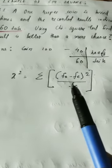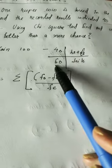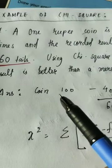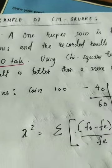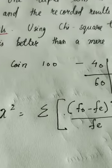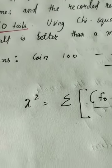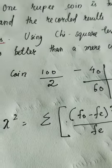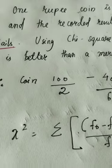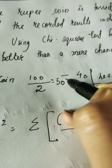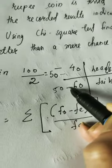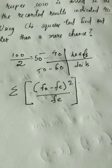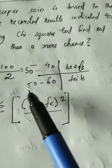We have the observed frequency: 40 heads and 60 tails. Now we have to find the expected frequency. When you toss a coin, the chances of a head or tail are 50-50 percent, because there are two possible outcomes. So the expected frequency is 50 for head and 50 for tail.